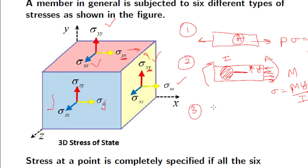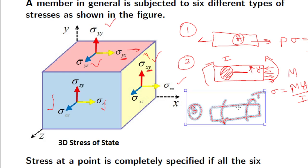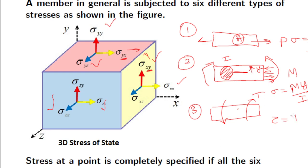If there is a torsion as well, when a torque acts, you can find the stress using the formula tau equals T R by Ip. So axial load and bending moment produce what are known as normal stresses, whereas torque produces shear stresses. Knowing the loads P, M, T, and other geometric factors, you will be able to find out the stresses and then determine what stresses are acting on the element.